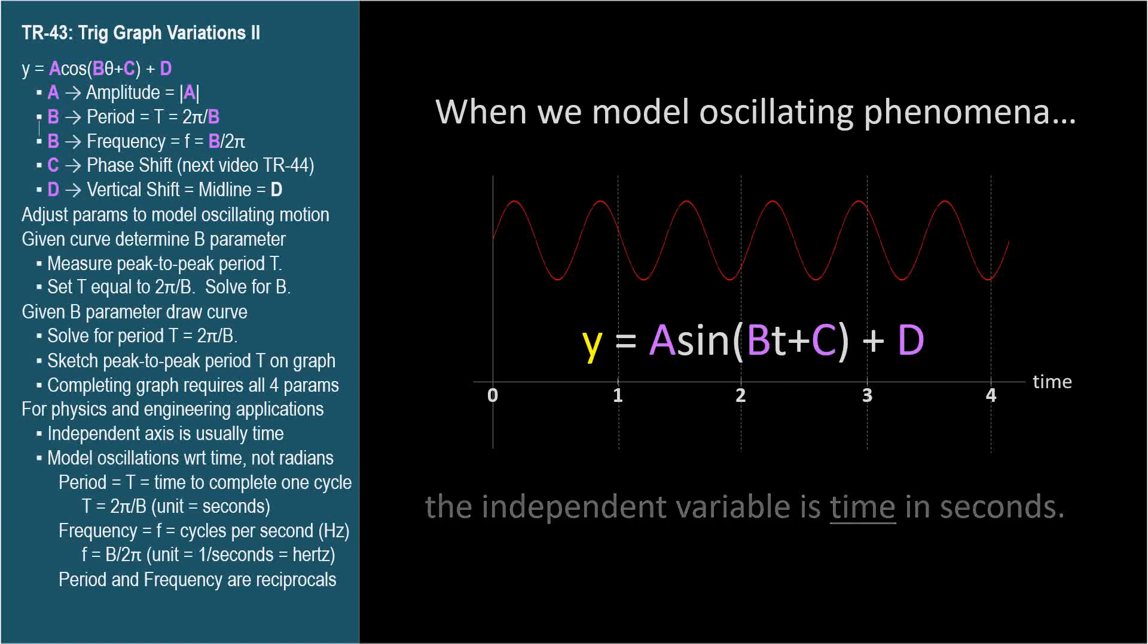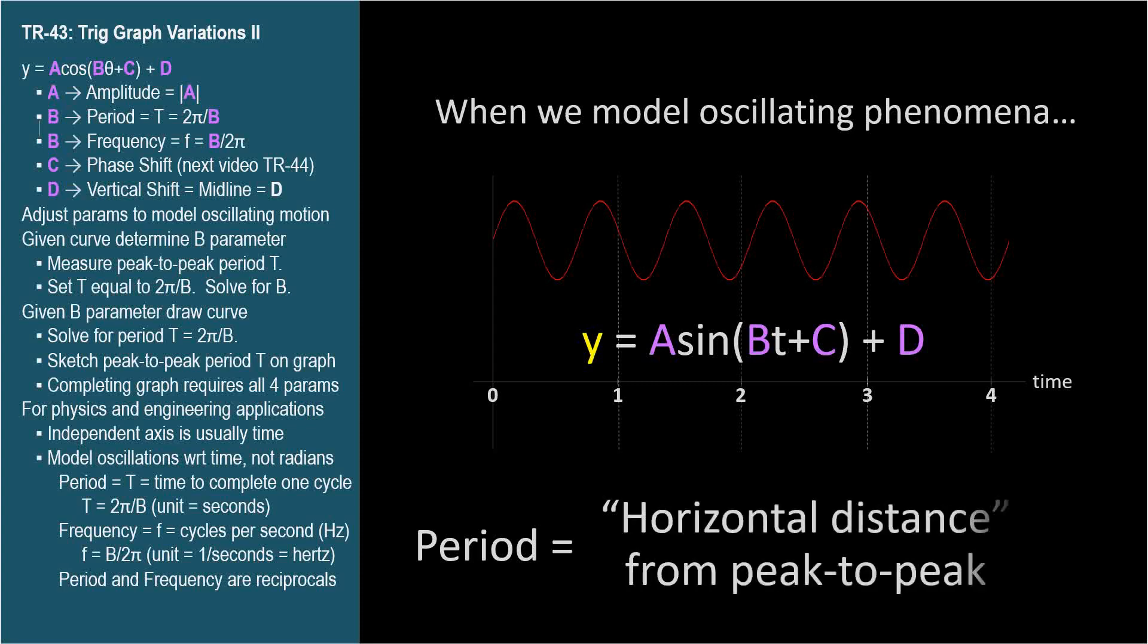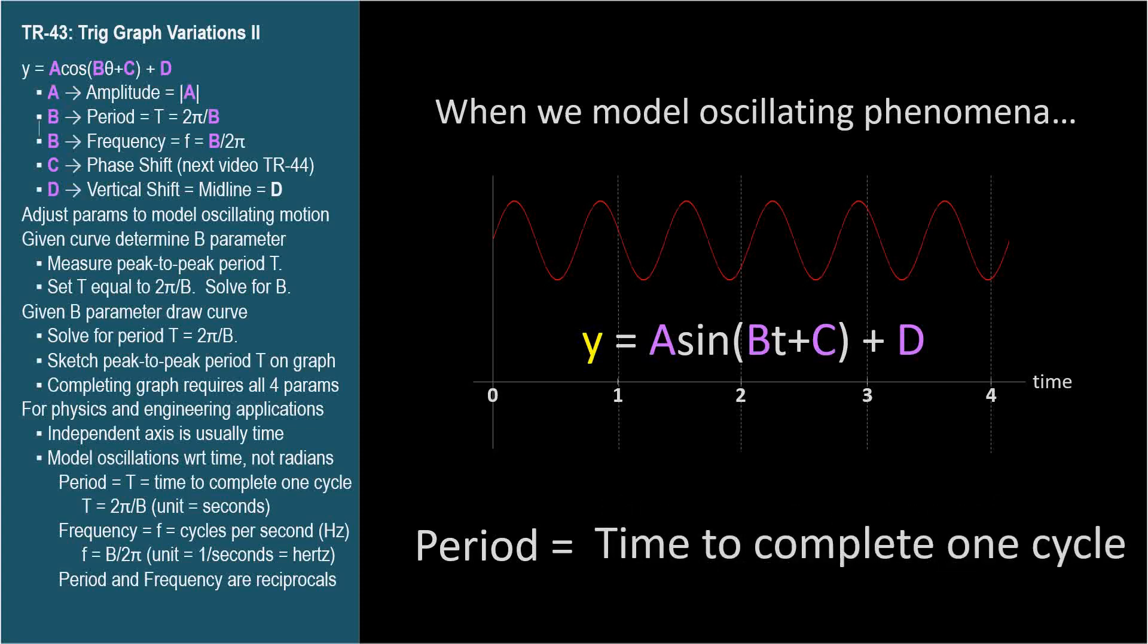Now let's revisit our definition of period. I said it was the horizontal distance between consecutive peaks or troughs. This is still true, but with time as the independent horizontal axis, period is now a period of time. The time it takes to complete one cycle, say from peak to peak. The symbol for period is capital T.